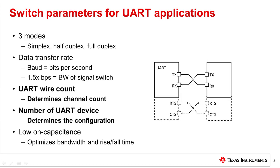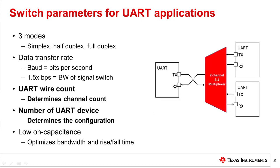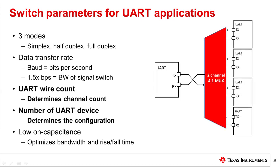It is important to consider whether a two-wire or four-wire interface is being used and the number of UART devices to be switched between. Typically, UART only uses two wires for communication, meaning a two-channel signal switch will be sufficient in most cases. The number of devices to switch between determines the needed configuration. For example, if a single two-wire UART is to be switched between two different UARTs, a two-channel two-to-one single-pole double-throw switch is best. If one UART is to communicate with four devices, a two-channel four-to-one MUX is the best fit.